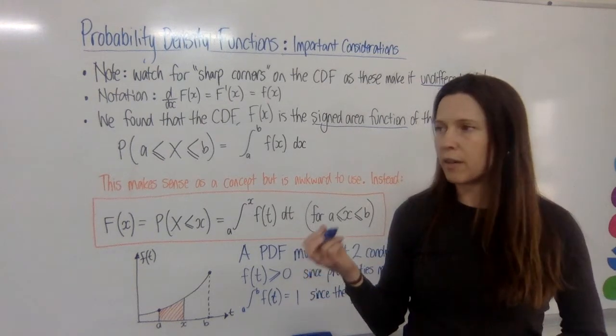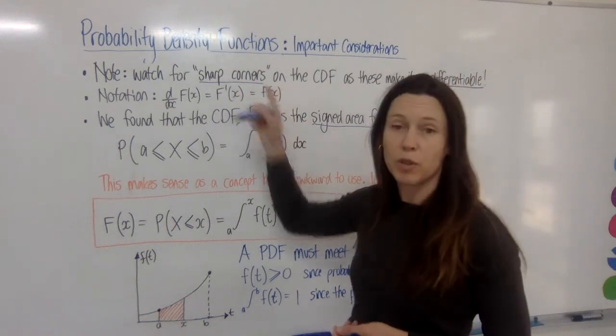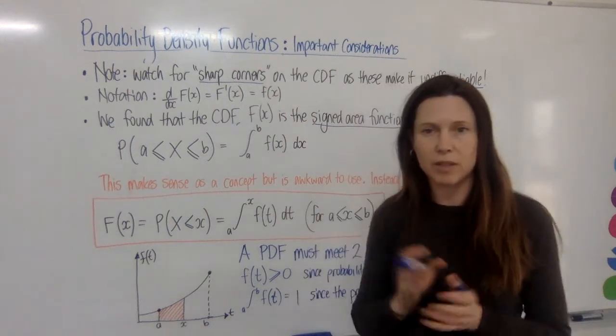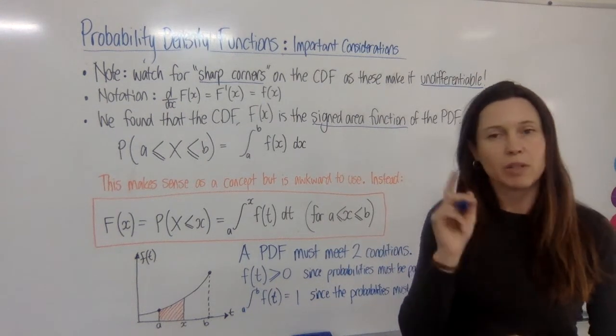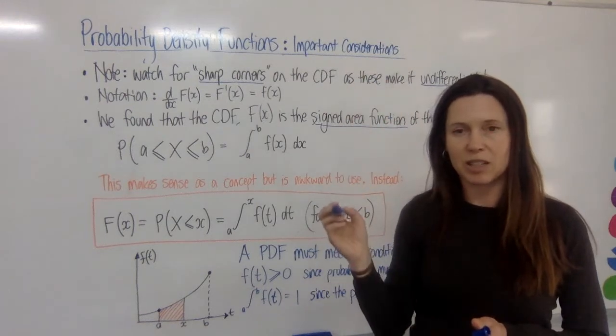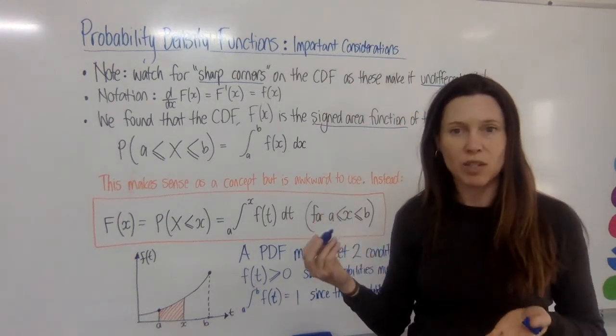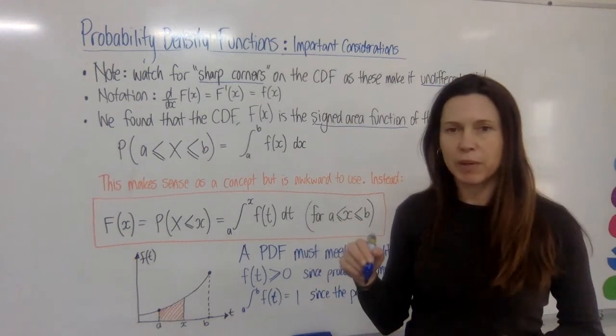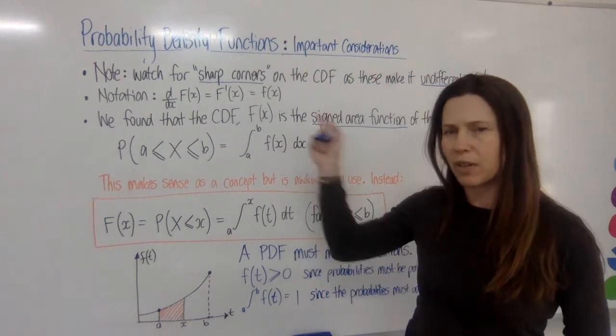Two things that make a function not differentiable is if it has sharp corners, and that's what you might see on a piecewise sort of function, or on a function with discrete data. With discrete data, the PDF polygon is actually made up of straight lines that do have sharp corners on them. And that explains why we can't use that process of integration with discrete data. We can only use it for continuous data.